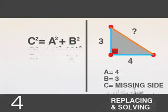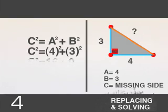Now, 4 squared is equal to 16, and 3 squared is equal to 9. 16 plus 9 equals 25.